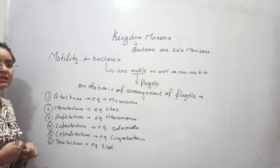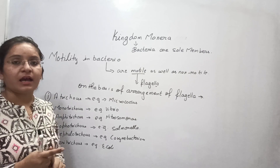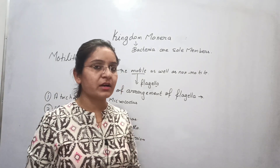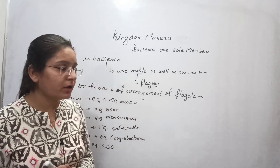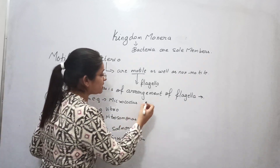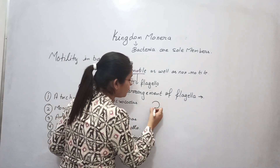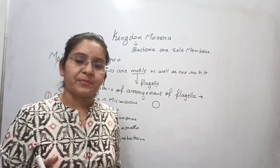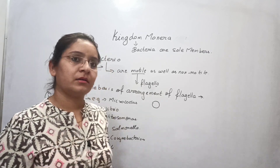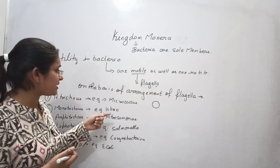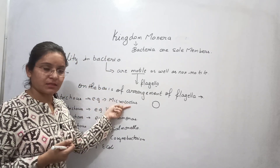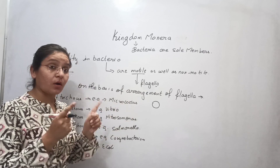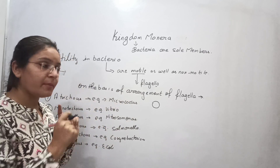The first category is atrichous. Atrichous means a bacterium that does not have flagella. If flagella are not present, the bacterium cannot move. A bacterial cell without flagella is called atrichous. An example is Micrococcus, a coccus-shaped bacterium.